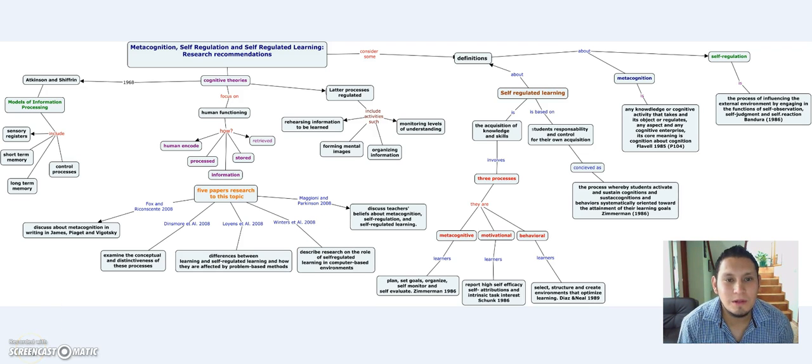And now, I will talk to you about three main concepts: metacognition, self-regulation, and self-regulated learning. I'll start by talking about metacognition, which was introduced by Flavell, a very big psychologist, in 1985.